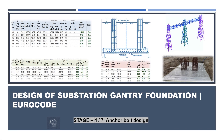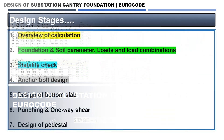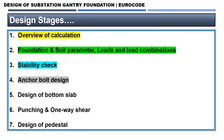Welcome viewers. In this video we are going to do design of substation foundation using zero code. This is stage four out of seven, in which we are going to do anchor bolt design. The first three stages covered overview of calculation, foundation and soil parameters, loads and load combinations, and stability check. In this stage we look at anchor bolt design, and in upcoming videos: design of bottom bed, punching and one-way shear, and design of pedestal in stages six and seven.